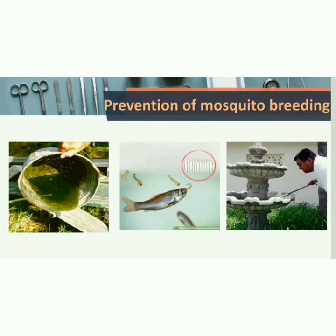Here are a few measures for prevention of mosquito breeding. In the first picture, collected water is being emptied. In the second picture, the fish has eaten the larvae. And in the third picture, the man is spraying oil on the collected water to prevent breeding of mosquitoes.